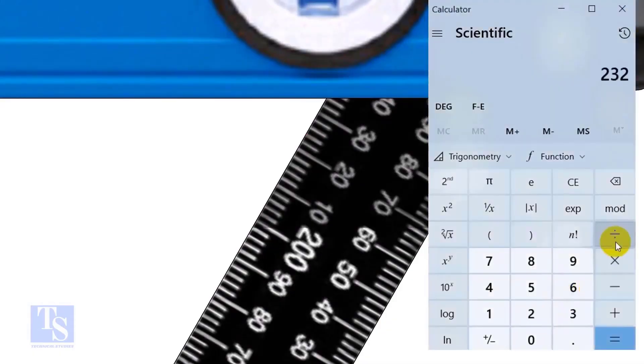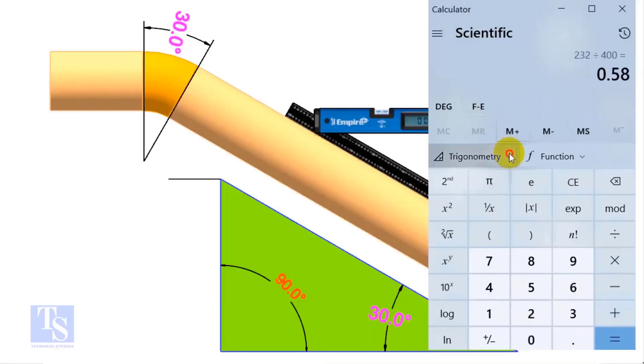Divide 232 by 400 is equal to 0.58. Now apply shift tan 0.58. The answer, after rounding, is 30 degrees.